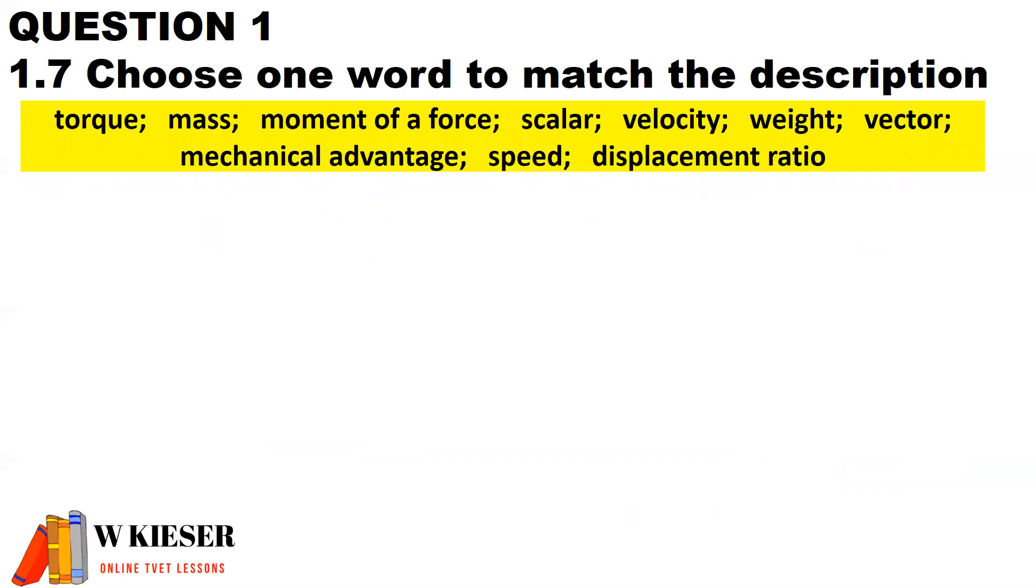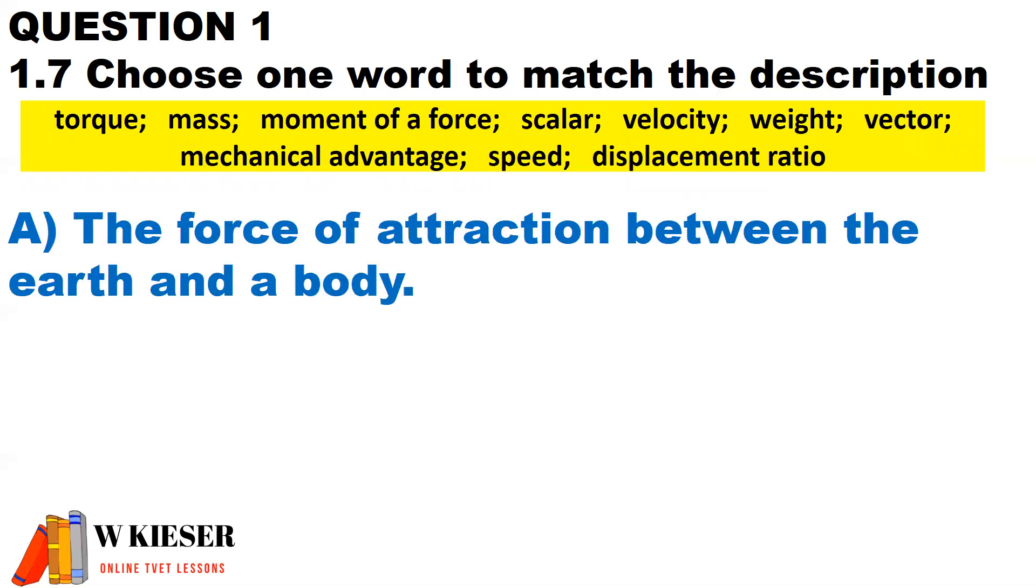Now for question 1.7, we need to choose a word inside of the yellow blocks which matches this description. The different words are torque, mass, moment of a force, scalar, velocity, weight, vector, mechanical advantage, speed and displacement ratio. For our first description,